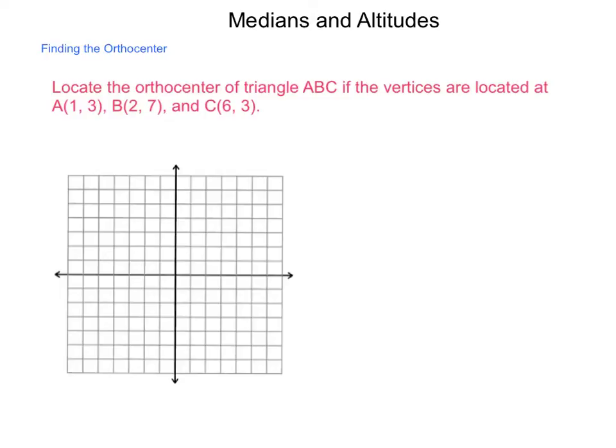We have 1, 3 for point A. We have 2, 7 for point B. And 6, 3 for point C. And again, we're trying to find the orthocenter. So I connect these 3 points. And with it, I'm also going to need to find their slopes.